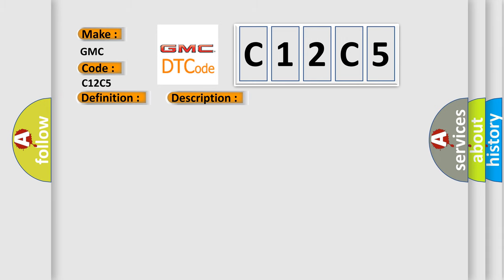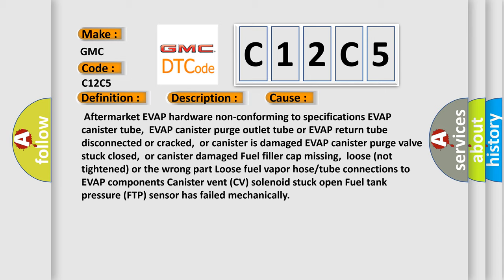This diagnostic error occurs most often in these cases: Aftermarket EVAP hardware non-conforming to specifications, EVAP canister tube, EVAP canister purge outlet tube or EVAP return tube disconnected or cracked, EVAP canister is damaged, EVAP canister purge valve stuck closed or canister damaged, fuel filler cap missing, loose not tightened or the wrong part, loose fuel vapor hose or tube connections to EVAP components, canister vent CV solenoid stuck open, fuel tank pressure FTP sensor has failed mechanically.